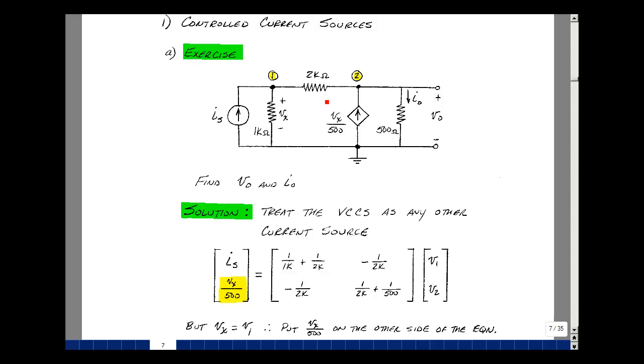Go to node number 2, and I've got two resistances hooked up. So 1 over 500 plus 1 over 2k go on row 2, column 2. Between nodes 2 and 1, we have a 2k resistor, so minus 1 over 2k. And we have the symmetry here with our off-diagonal terms. The current source entering this node is just 1, and it's equal to V sub x over 500.